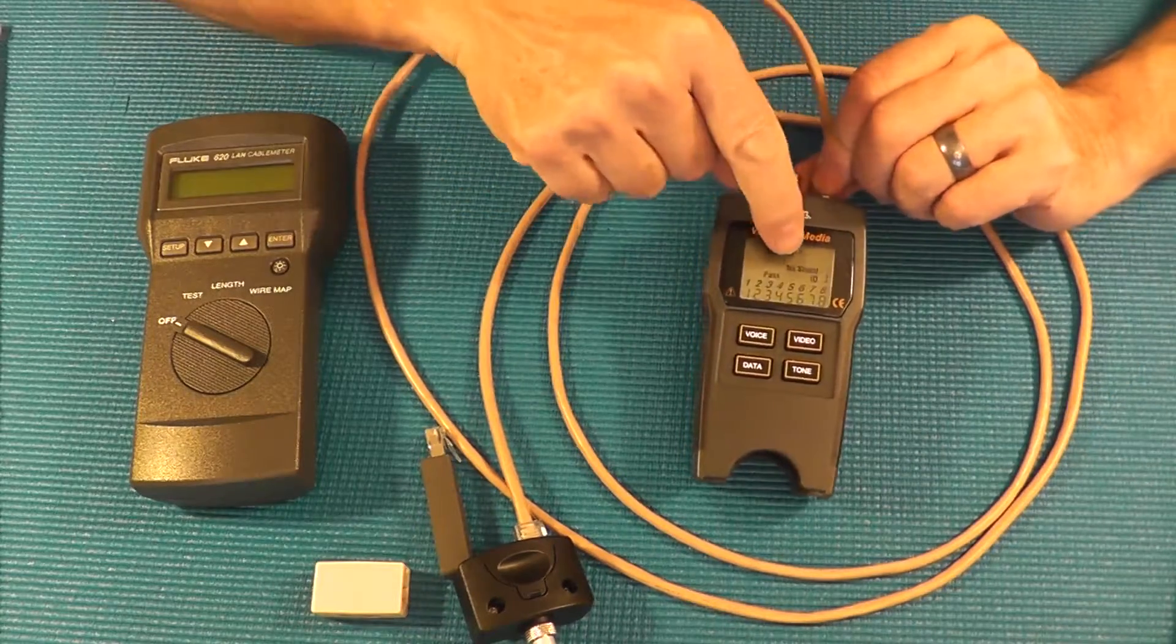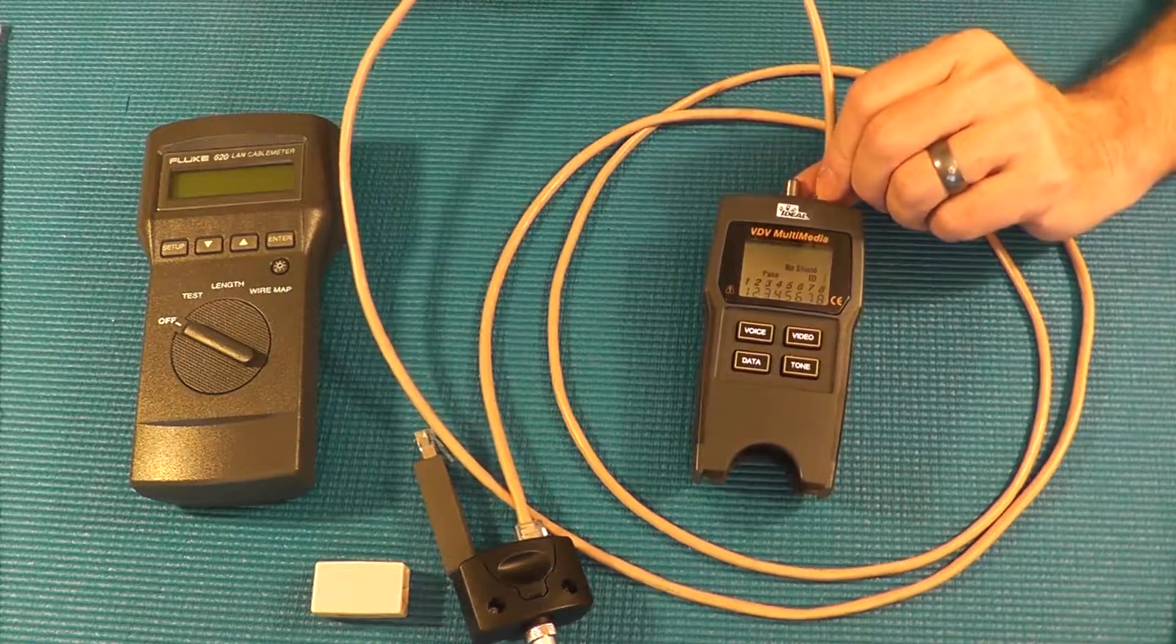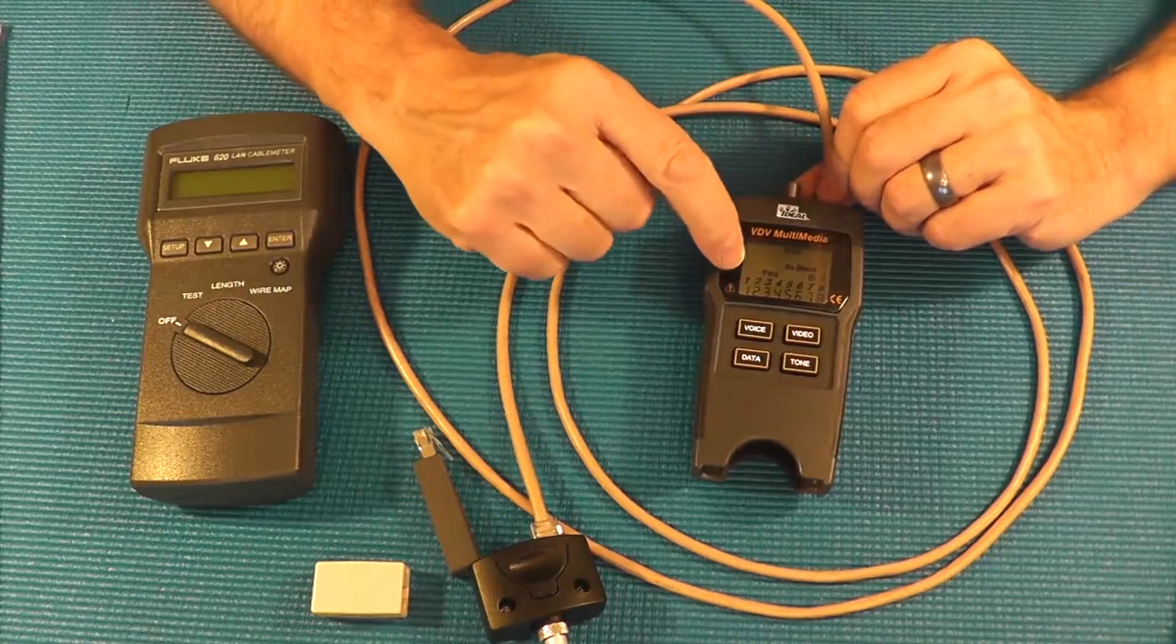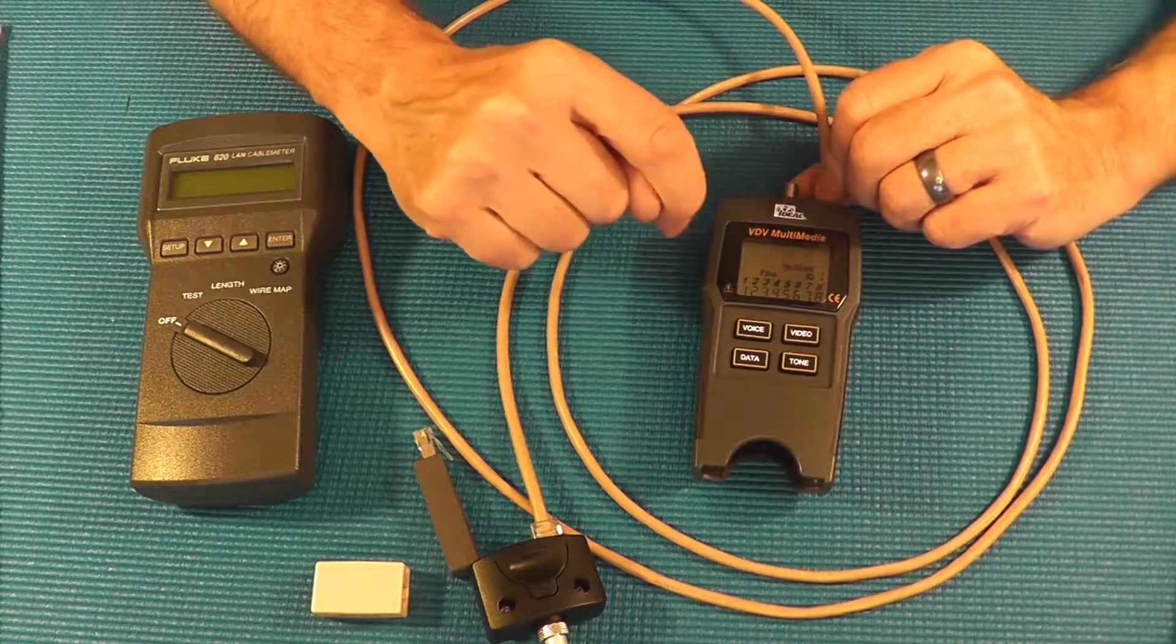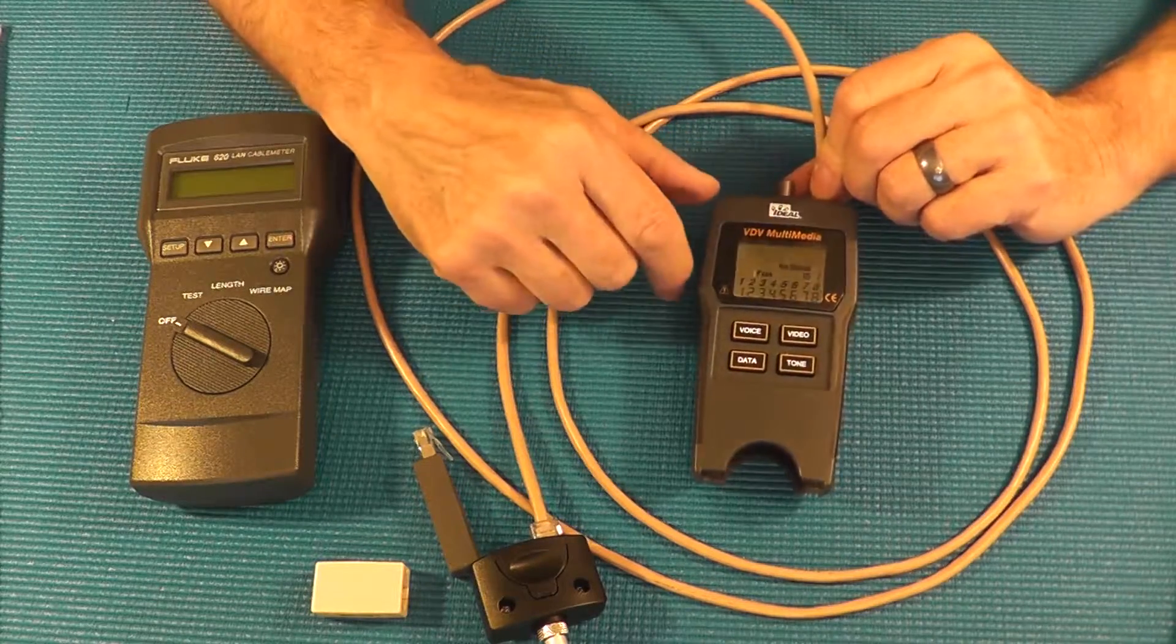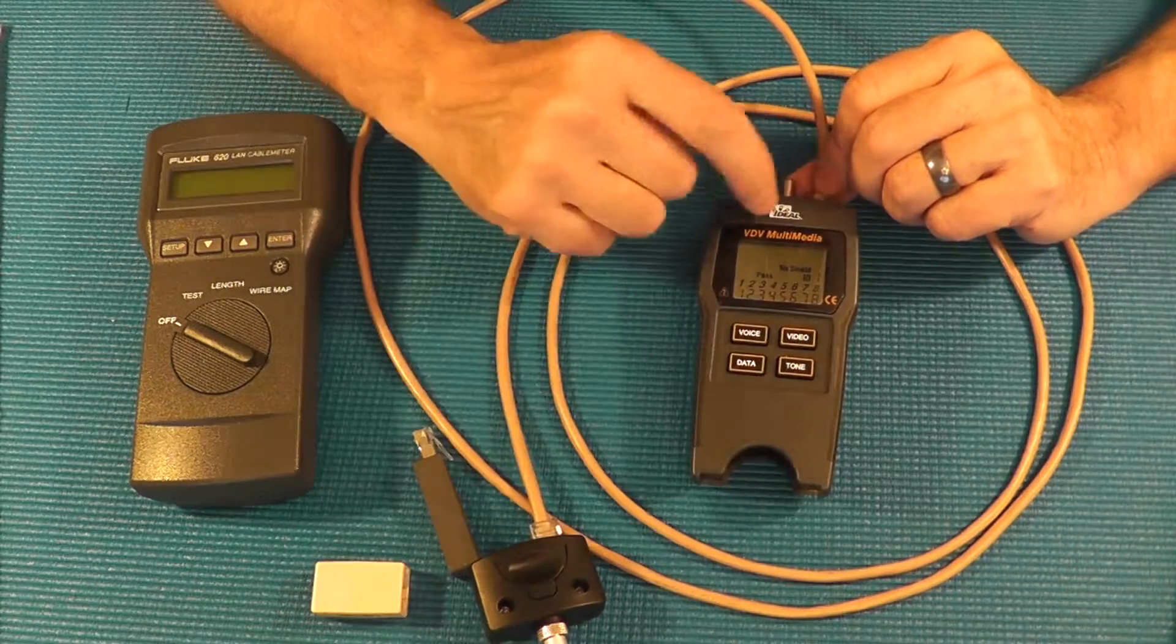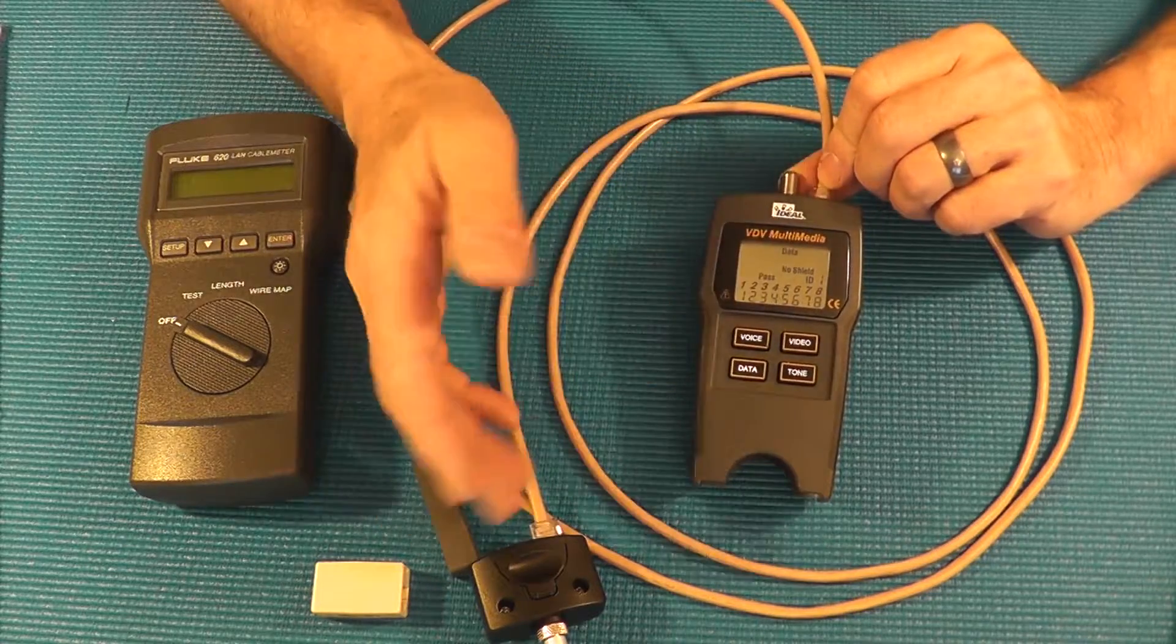For one thing it says there's no shielding. Yes that's true. This is UTP which is unshielded twisted pair. It finds ID number one which is what my ID unit is and then it gives me two rows of numbers. The numbers go right in order from one to eight. Both rows of numbers are exactly one through eight. What that's indicating is what's connected on pin number one on this end is connected to pin number one on the other end and two goes to two and three goes to three and four goes to four and so forth.